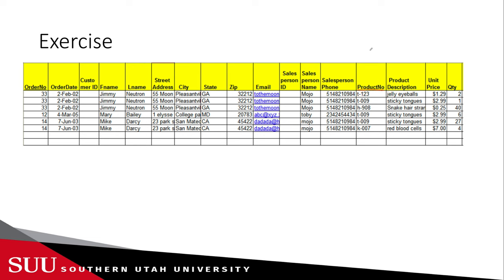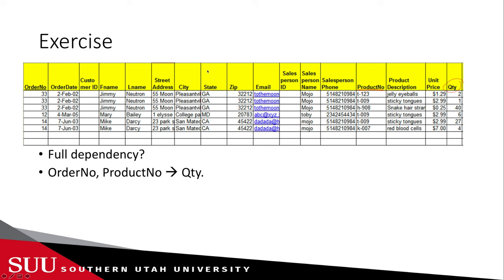To get to second normal form, we need to remove all partial dependencies. First, let's check for full dependencies. A full dependency is when an attribute relies on the full key. What relies on both order number and product number combined? It is the quantity. So we have one full dependency: quantity depends on the composite key of order number and product number. There are no other full dependencies.